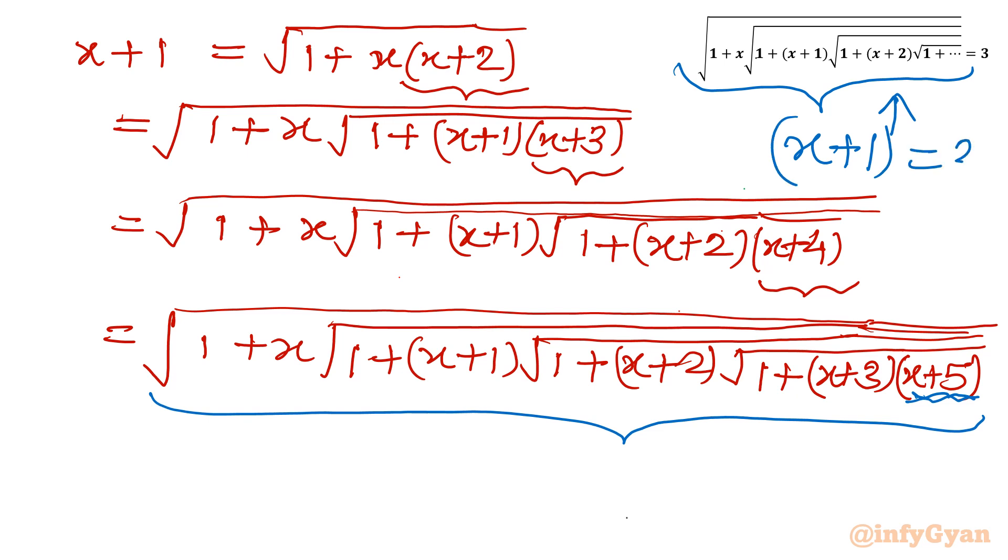And right hand side is 3. So I will write x plus 1 equal to 3. Take away 1 from both sides: x plus 1 minus 1, 3 minus 1. 1 will be over. x will be equal to 2. Our answer is x equal to 2.